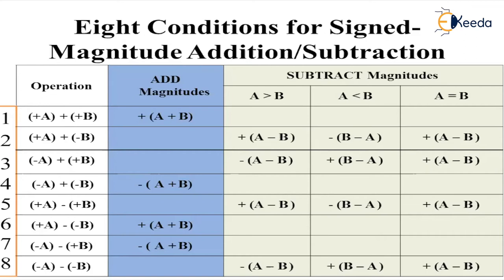For −A − (+B): we add the two numbers and the output will be a negative number. For −A − (−B): if A is greater than B, the answer is A minus B and the output is negative. If A is less than B, perform B minus A and the output is positive. If A equals B, perform A minus B and the output is positive.